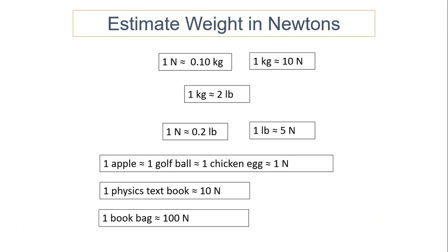So weight, actually force and mass are related. Here is the relationship. One Newton is about a tenth of kilogram. That means one kilogram is about 10 Newtons. If we know the mass of something, then we can estimate how much it weighs. One kilogram is about two pounds. That means one Newton is about a quarter pound, or one pound is about five Newtons. So let's see some common objects: an apple, golf ball, chicken egg, or tennis ball, something small you hold in your hand, that's about one Newton.